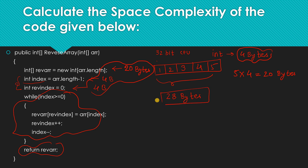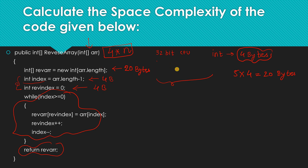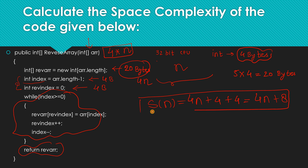This is the space to declare the variables. But we can give any input here, so suppose the length of the array is n, and every integer takes 4 bytes, so the space taken by the array will be 4 times n. Now let's calculate the generic space complexity where the length of the array is n. This becomes 4n plus 4 plus 4, so space complexity is 4n + 8 for this algorithm.